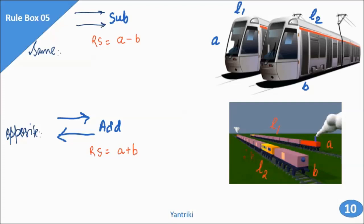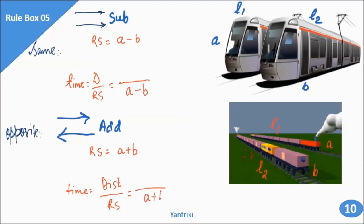In such questions, we need to find in how much time will the trains cross each other. To find time, the formula is distance divided by relative speed. In the same direction case, relative speed is a minus b; in the opposite direction case, relative speed is a plus b. In both cases, the distance travelled by the trains will be L1 plus L2.